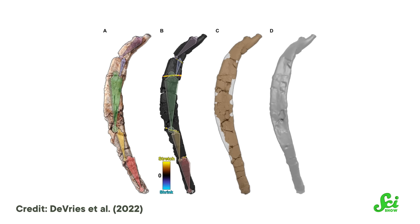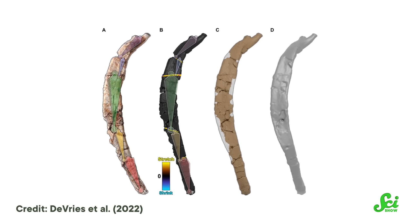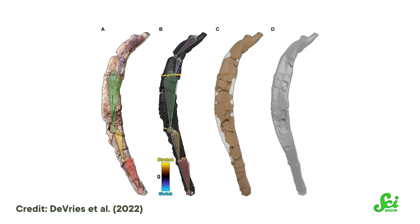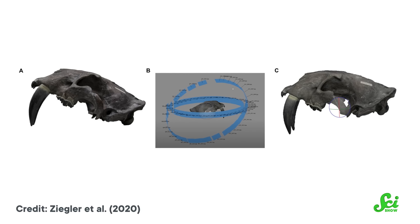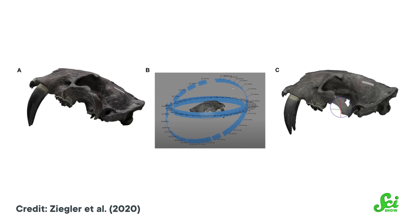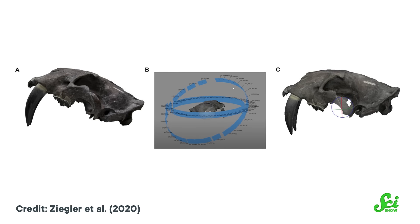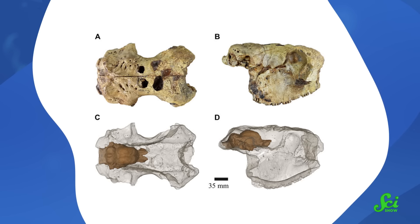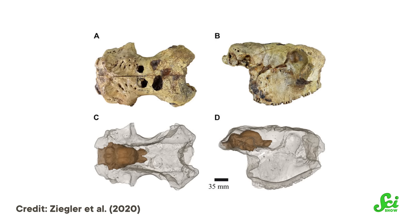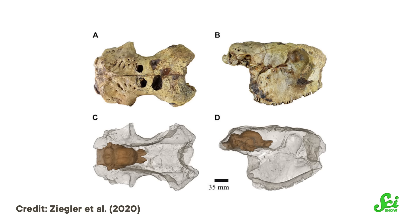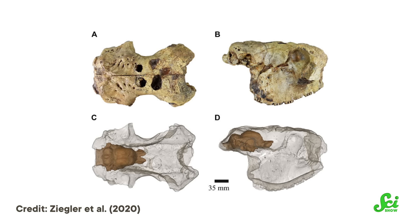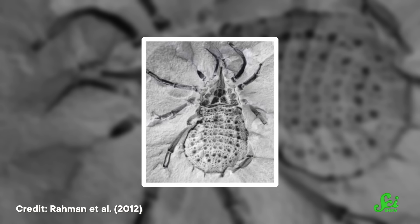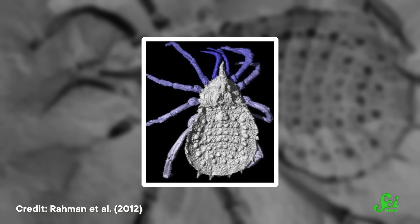Lots of paleontologists rely on 3D graphics software to make virtual fossils, which are exactly what they sound like. You take high-quality CT or surface scans of a fossil, upload them into the software, and boom — a virtual replica of a piece of history. Over the past few decades, this technology has made it a lot easier to be a paleontologist. As computers have gotten cheaper and 3D interfaces have gotten easier to use, virtual fossils have allowed modern paleontologists to do things they never dreamed of a few decades ago.